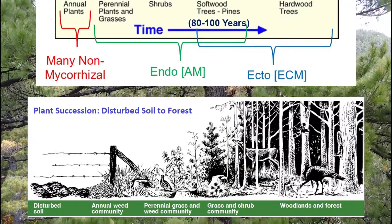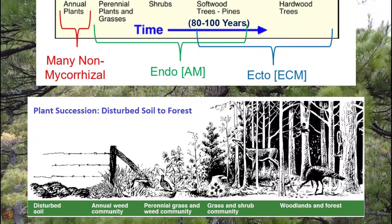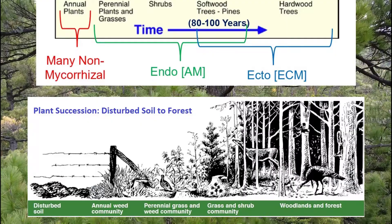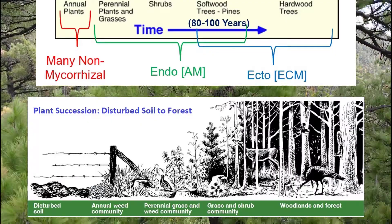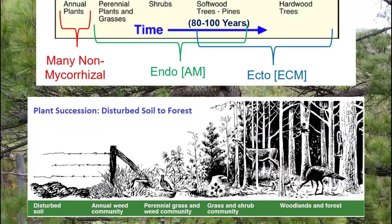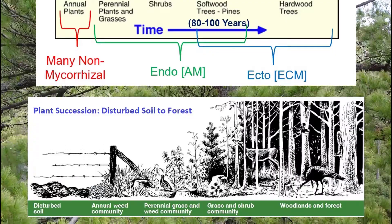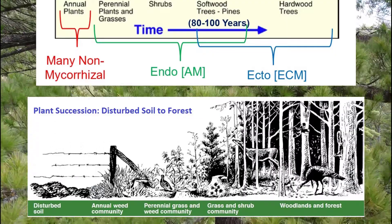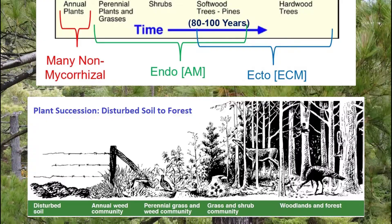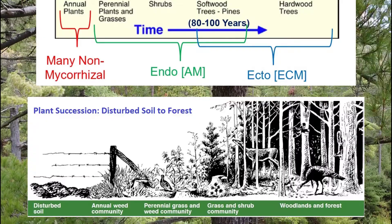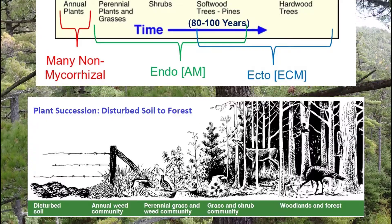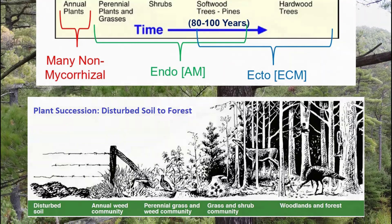And finally, in the climax stages of succession, we see the forest populated with dense, tall stands of hardwood trees and conifers. And below grade, the mycorrhizal that those plants need arise too — the ecto or ECM mycorrhizal.